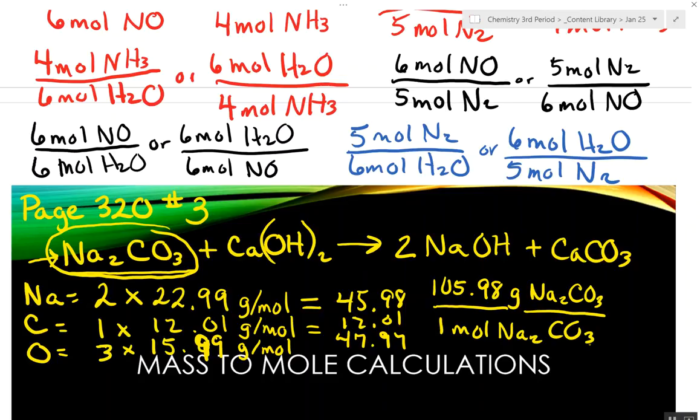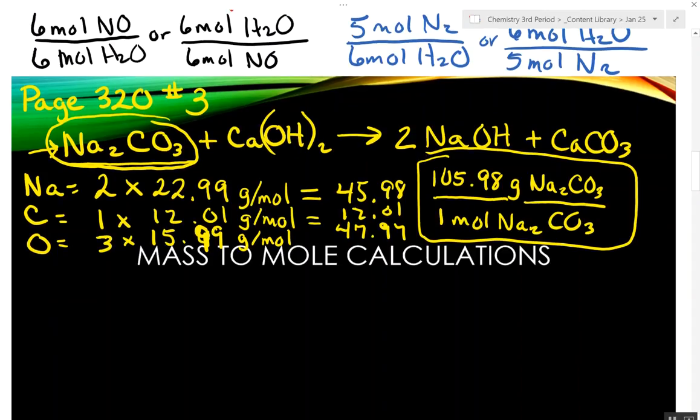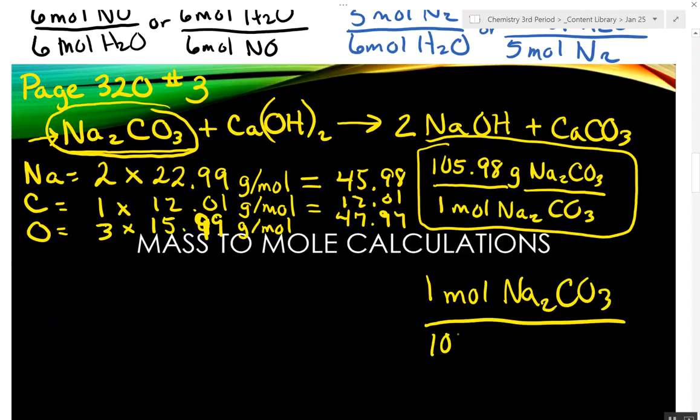Then what would be another conversion factor of this right here? What do we do? Flip it over, right? Another conversion factor of this is one mole of Na2CO3 has one hundred and five point nine-eight grams of Na2CO3.